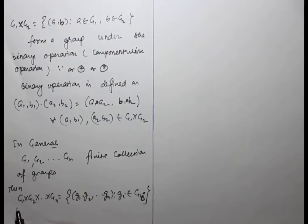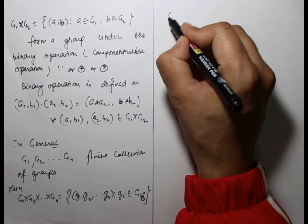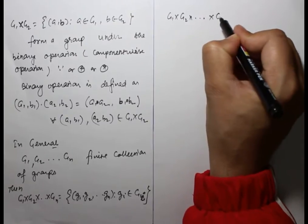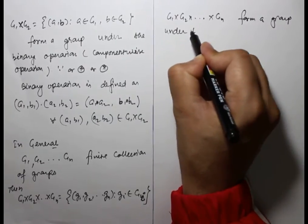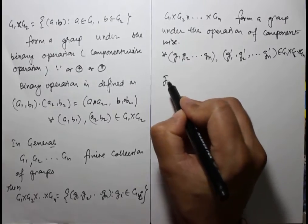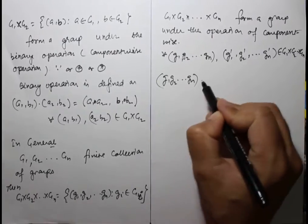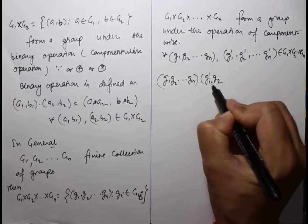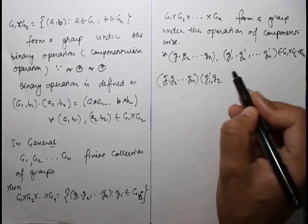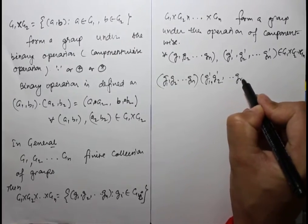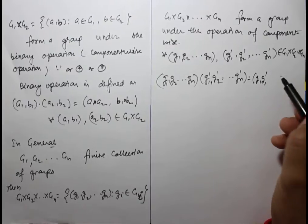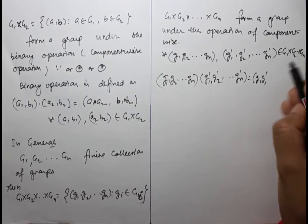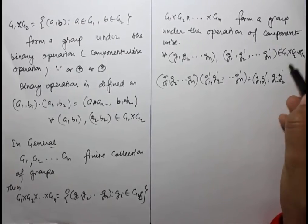In general, G1 cross G2 cross ... cross Gn contains all n-tuples. This G1 cross G2 cross ... cross Gn forms a group under the component-wise operation: (g1, g2, ..., gn) * (g1', g2', ..., gn') = (g1*g1', g2*g2', ..., gn*gn'), where each component uses the operation of its respective group.